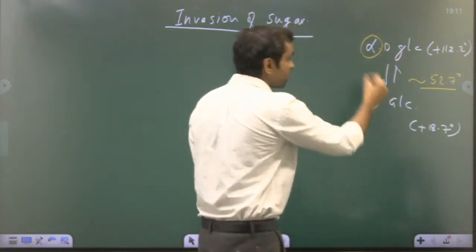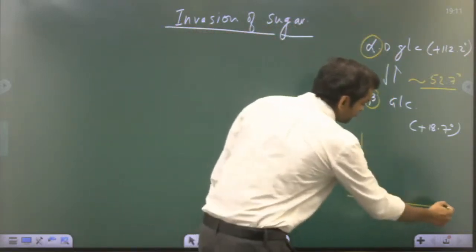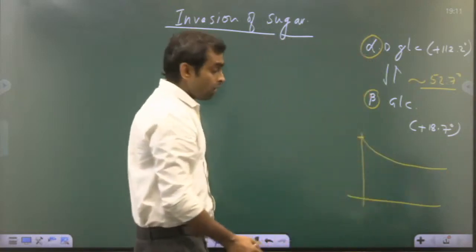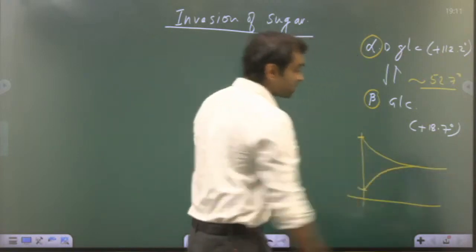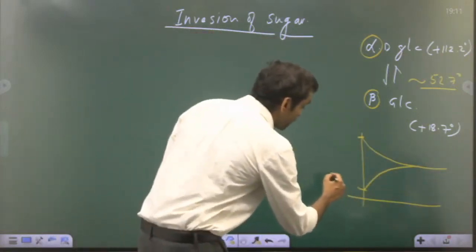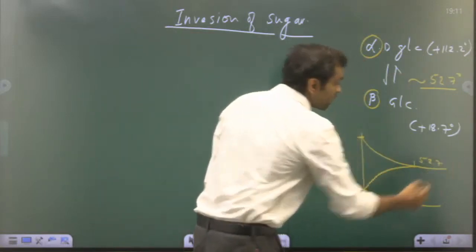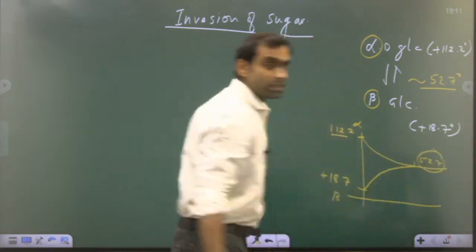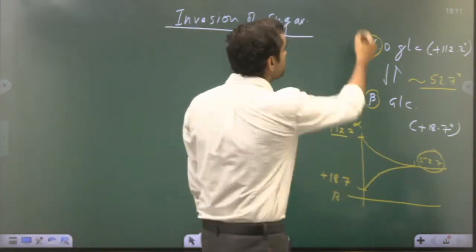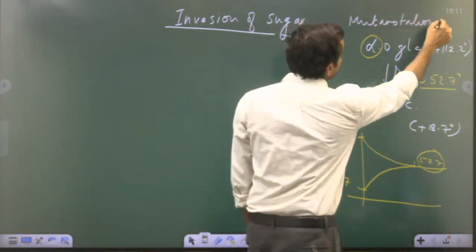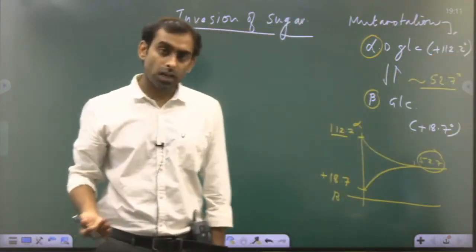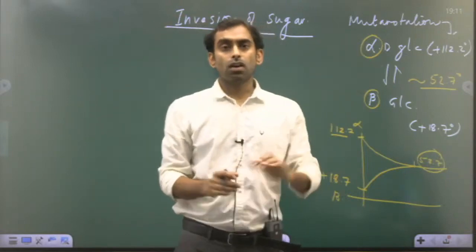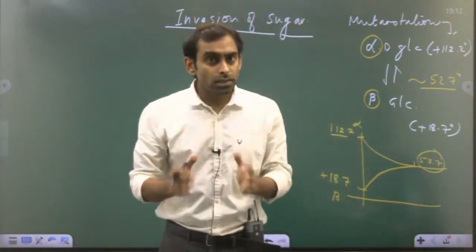If you take pure alpha or pure beta, we observe through a graph that the optical activity of pure alpha glucose keeps decreasing until it becomes constant, while optical activity of pure beta keeps increasing until it becomes constant. This increases from +18.7 to 52.7, or if you started with pure alpha, the value decreases from 112.2 to 52.7. This phenomenon is called mutarotation — the process of change in optical activity of glucose and related sugars on transformation of one anomeric form to another until they reach equilibrium.